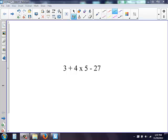Okay, here we're solving this problem. We have 3 + 4 × 5 - 27.